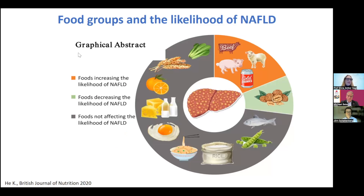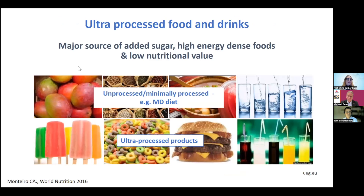Patients sometimes tell me, 'do I need to eat just vegetables and salads for the rest of my life? There's nothing left for me to eat.' I love this figure showing that you can eat a lot of foods. You need to avoid sugar beverages and all the processed meat, but all the foods shown in gray and green are actually okay — they're either helpful or neutral. Most of this is food that most of us actually eat in our daily life.